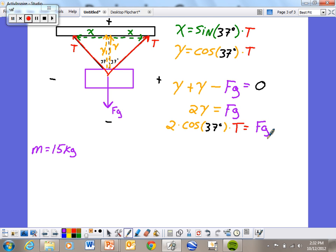And the force of gravity is the mass times 9.8. Since we have mass, you can plug in Mg, and that would look something like this. I still have my two cosine 37 degrees times T equals Mg, which is the equation for gravity. And don't forget that G is always 9.8 because we're here on Earth.